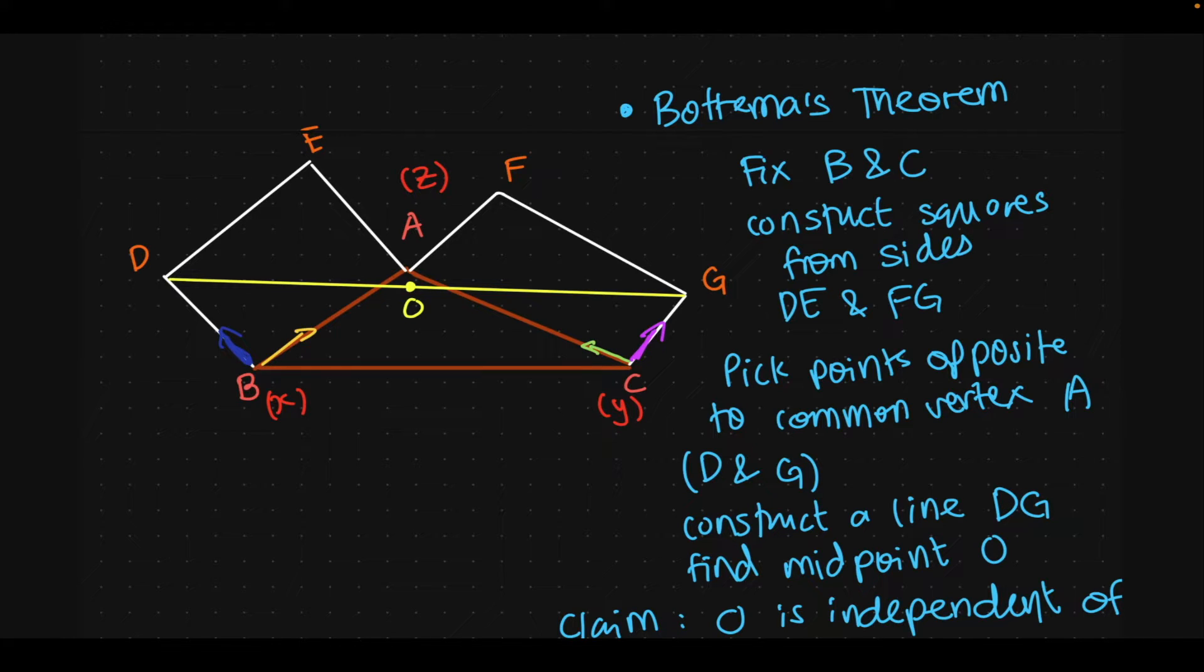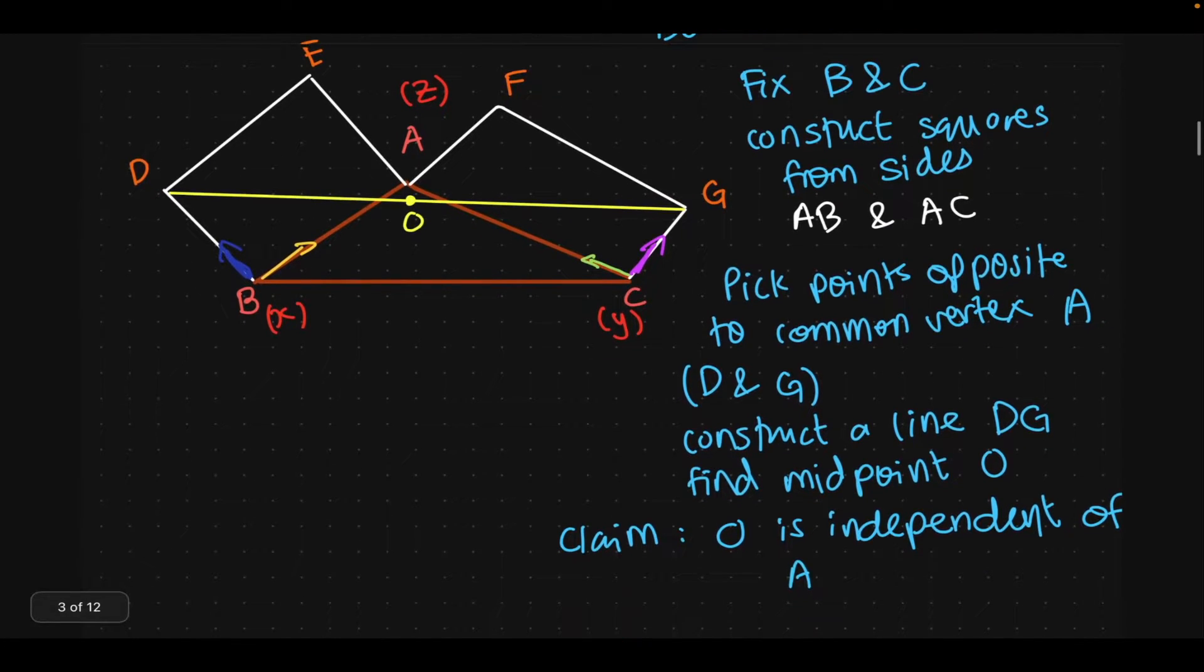Now, we can construct squares from sides AB and AC. When we do that, we get this square BAED and FACG, both of these squares. Now in these squares, we're going to pick points that are opposite to the common vertex A. This is the common vertex A, point opposite to that in this square is actually going to be D. So we pick D. And similarly here, point opposite to A is actually G. We pick G. And then we construct a line joining those points, DG, the yellow line. And we find the midpoint O. Okay, this is the construction.